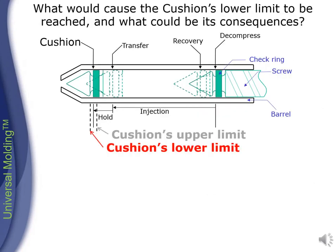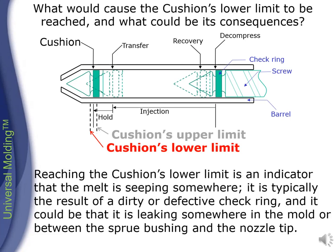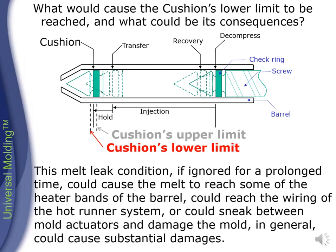What would cause the cushion's lower limit to be reached and what could be its consequences? Reaching the cushion's lower limit is an indicator that the melt is seeping somewhere. It is typically the result of a dirty or defective check ring, and it could be leaking somewhere in the mold or between the sprue bushing and the nozzle tip. This melt leak condition, if ignored for a prolonged time, could cause the melt to reach some of the heater bands of the barrel, could reach the wiring of the hot runner system, or could sneak between mold actuators and damage the mold. In general, it could cause substantial damages.